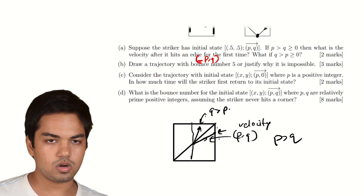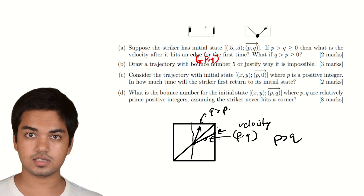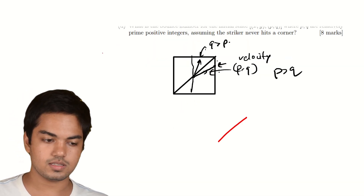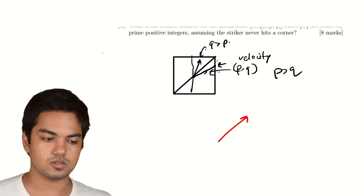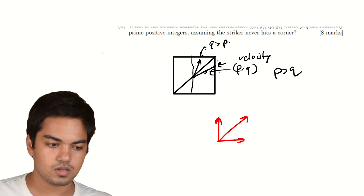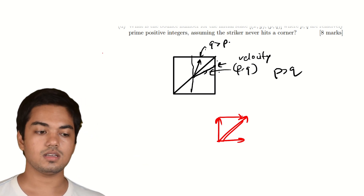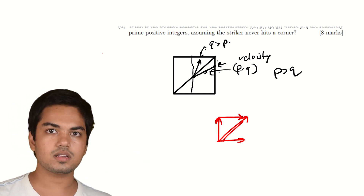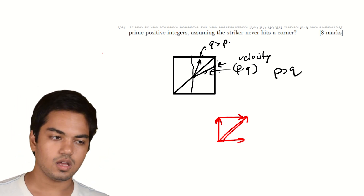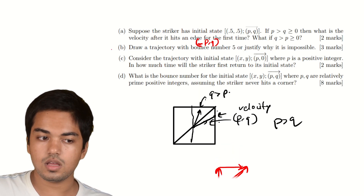The key idea here is to separate the motion of the striker into two component parts. Those with a physics background will find this natural. If you have a motion like this, you can break it into one component along the x-axis and one along the y-axis, and sum those vectors to get the actual motion. This decomposition into horizontal and vertical components is the central idea of the entire problem.